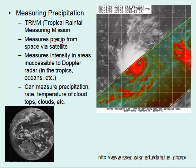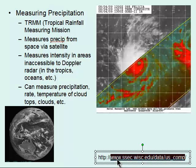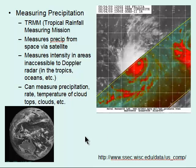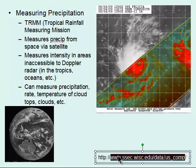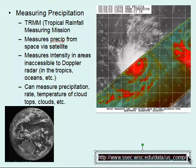Using the TRMM — Tropical Rainfall Measuring Mission — method, we can measure precipitation from space via satellite, including the intensity of storms, the rate of precipitation, the temperature of the cloud top, and cloud cover. There's an image here showing this data, and I will post the link where you can see short video clips of recently collected data.